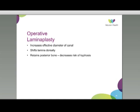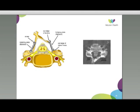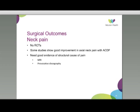The last operative option is laminoplasty, where the posterior elements — the lamina — are not removed but repositioned to increase the effective diameter of the canal. By shifting the lamina dorsally, increased space is created in the canal and compression is reduced, while retaining the posterior elements decreases the risk of kyphosis. The lamina is released on one side, rotated outward, and held in place with plates on one or both sides, sometimes supplemented with bone graft, as shown in this diagram and CT.